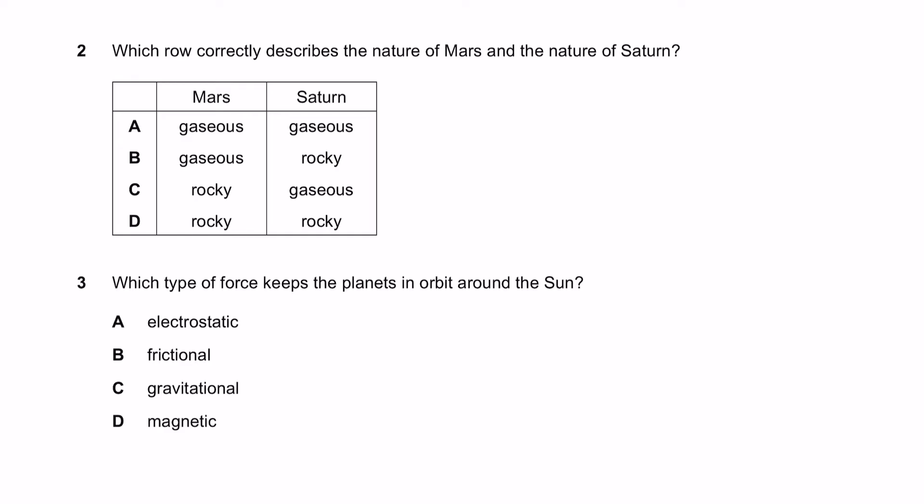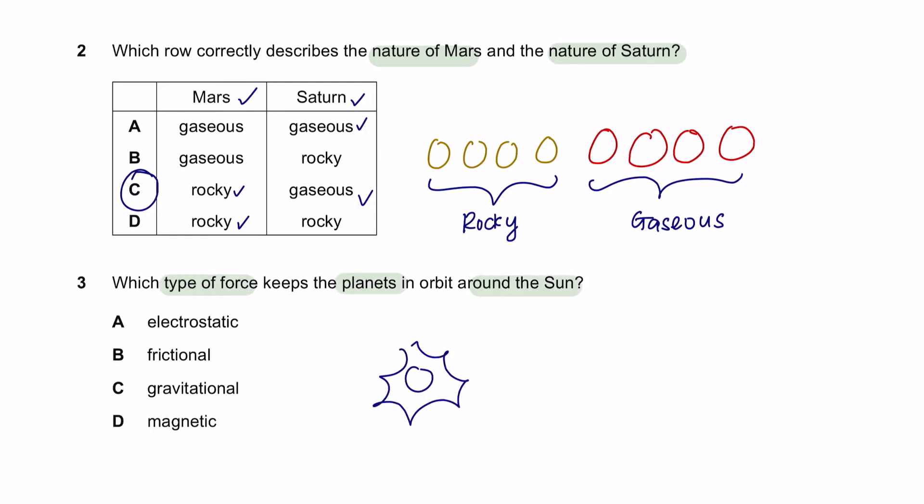Question 2. Which row correctly describes the nature of Mars and the nature of Saturn? The first 4 planets in the solar system are rocky and the other 4 planets in our solar system are larger and gaseous. Mars is found in the first 4 planets so it is rocky, Saturn is in the last 4 which is gaseous. So the answer here is C.